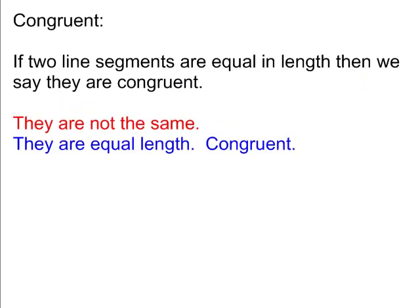The concept of congruency. Two line segments, if they're equal in length, then we can say that they are congruent. They are not the same line segments. They are equal in length. Therefore, they are congruent.